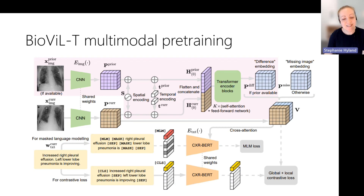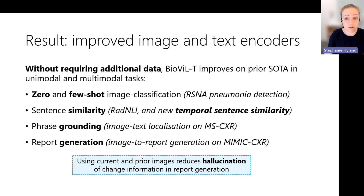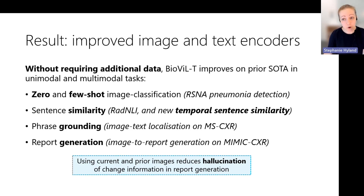Here is the overall pipeline — please check the paper for details. Without requiring additional data, the BioViLT method improves on prior state of the art across various tasks, both unimodal and multimodal: zero and few-shot image classification on the RSNA pneumonia detection benchmark; sentence similarity metrics using RadNLI and a new temporal sentence similarity dataset we will release; phrase grounding for image-text localization on the MS-CXR dataset; and report generation on MIMIC-CXR. During report generation, using both current and prior images reduces hallucination of change information, which is otherwise common.